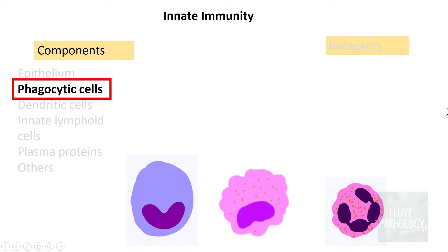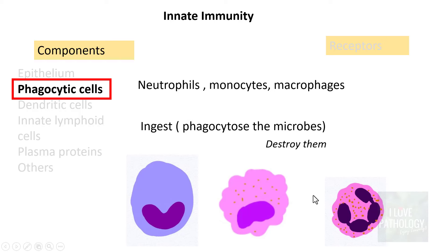The second component of innate immunity is phagocytic cells, which we have discussed in detail in the chapter on inflammation. The phagocytic cells include monocytes, macrophages, and neutrophils. They ingest and phagocytose microbes and then destroy them.